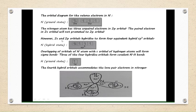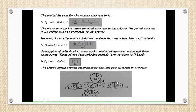However, the 2s and 2p orbitals hybridize to form four equivalent sp3 hybrid orbitals. So we get one, two, three, four — which are the sp3 orbitals of N, the central atom. The overlapping of the sp3 orbitals of N with the 1s orbital of hydrogen atoms will form sigma bonds. Three of the four hybridized orbitals form covalent bonds with H.